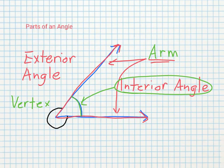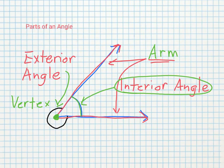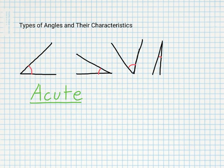The interior angle is marked by this green part here. The vertex is this part right here — what you might call a corner is actually called the vertex for angles. The exterior angle is marked by this black line here, and that is the measure of the size of the angle on the outside.